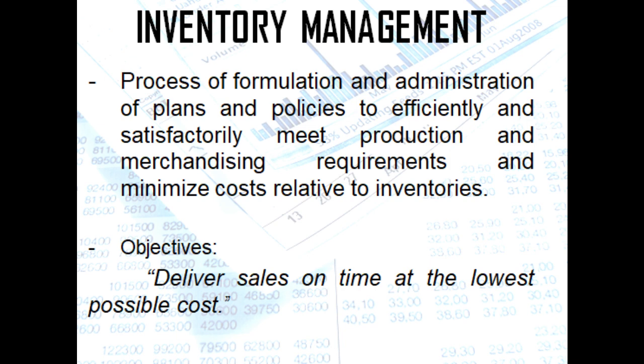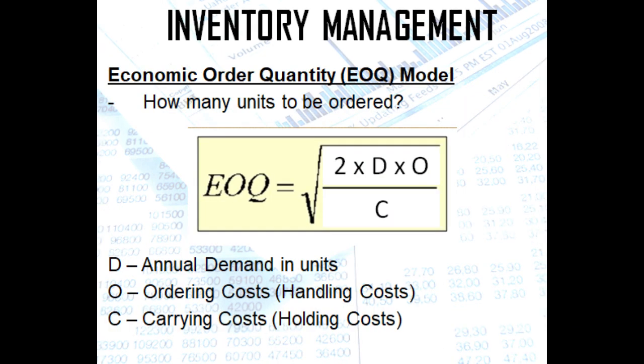Remember, when you produce something or you sell something, it entails cost. One of the models that we need to know under inventory management is what we call economic order quantity, or the EOQ model. The formula for this is the square root of 2 multiplied by D multiplied by O, all over C.